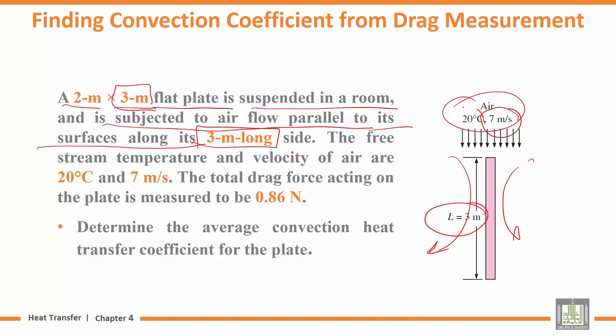The free stream temperature and velocity are given: 7 meters per second velocity, 20 degrees Celsius temperature. The total drag force acting on the plate is measured to be 0.86 N. The goal is to find the average convection heat transfer coefficient H for the plate.